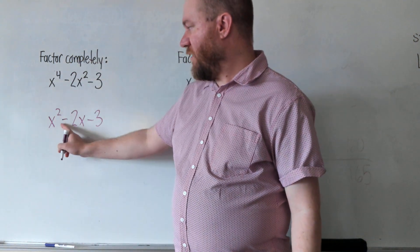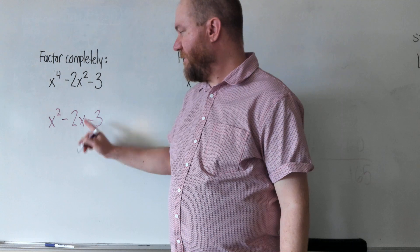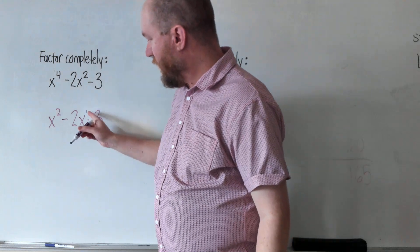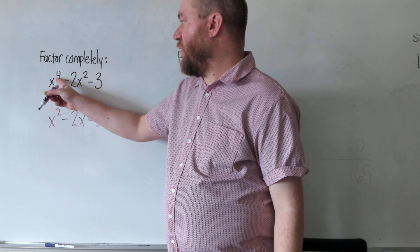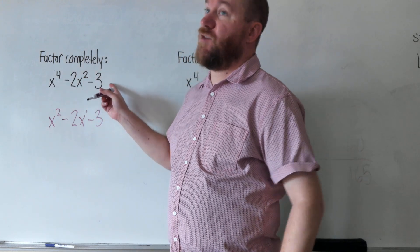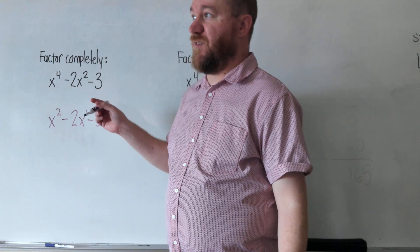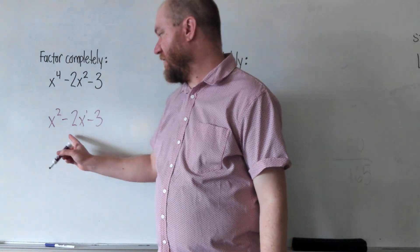We have x squared minus 2x minus 3. This has an exponent of 1, and that has an exponent of 2. As long as this exponent is double that exponent, and this term has no exponent, we can use the same format for factoring.